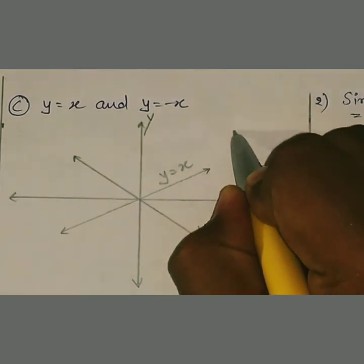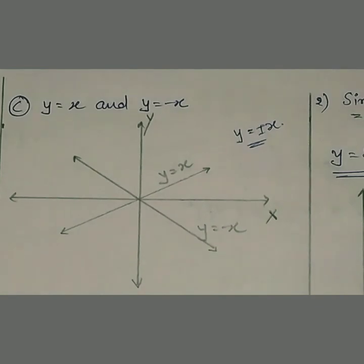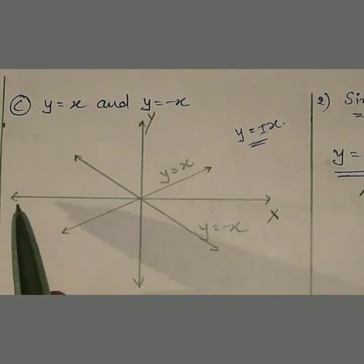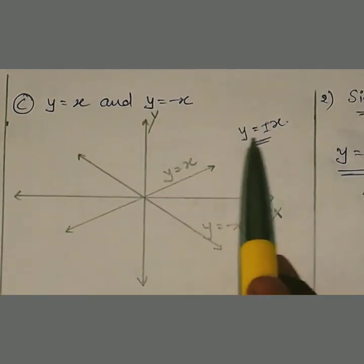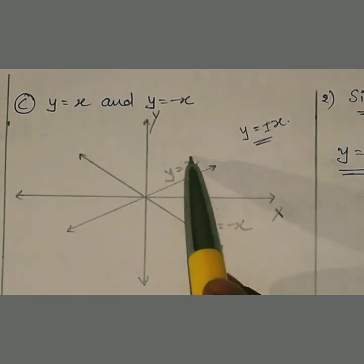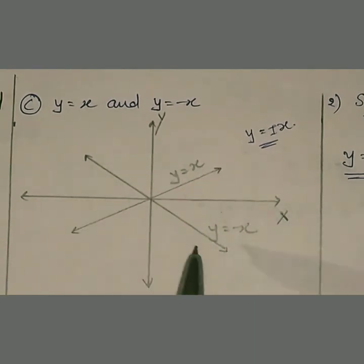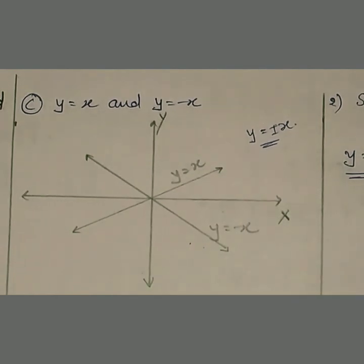Graph of y = ±x: y = x is an increasing straight line through the origin, and y = −x is a decreasing straight line through the origin। This is your x-axis, this is your y-axis। y = x is the increasing line and y = −x is the decreasing line — both are straight line graphs।